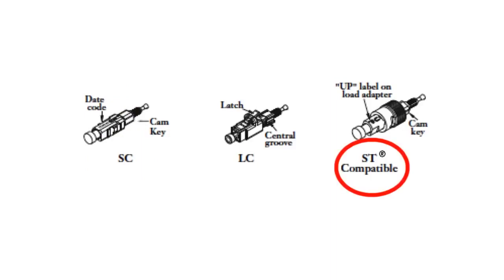ST connectors are in their open position when the key is 90 degrees from the word 'up' on top of the connector. LC connectors are in their open position when the key is 90 degrees from the latch.